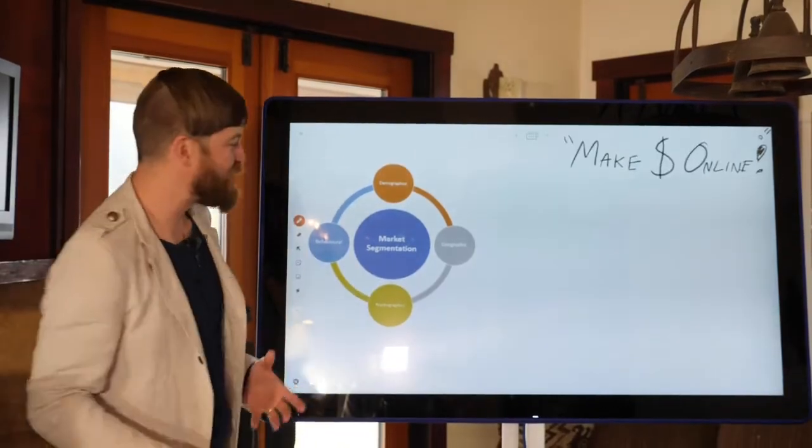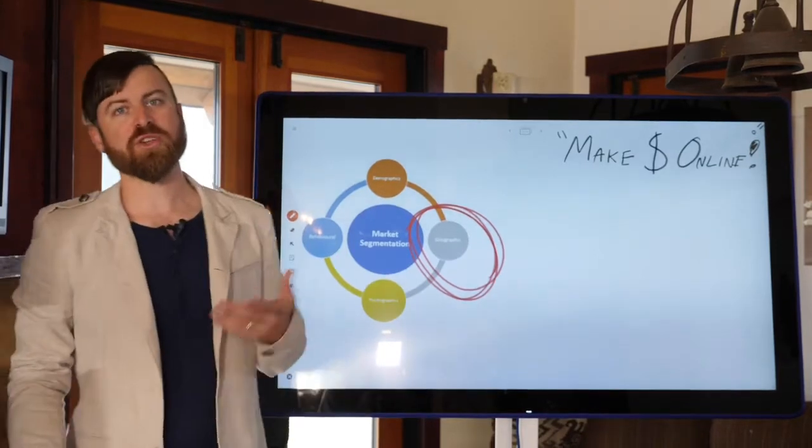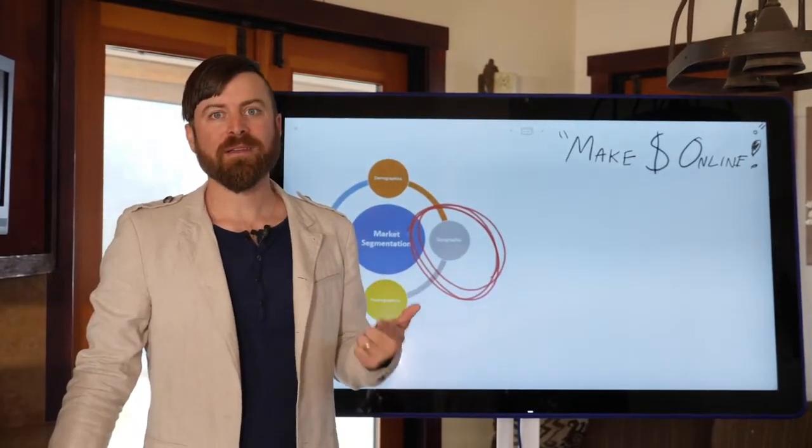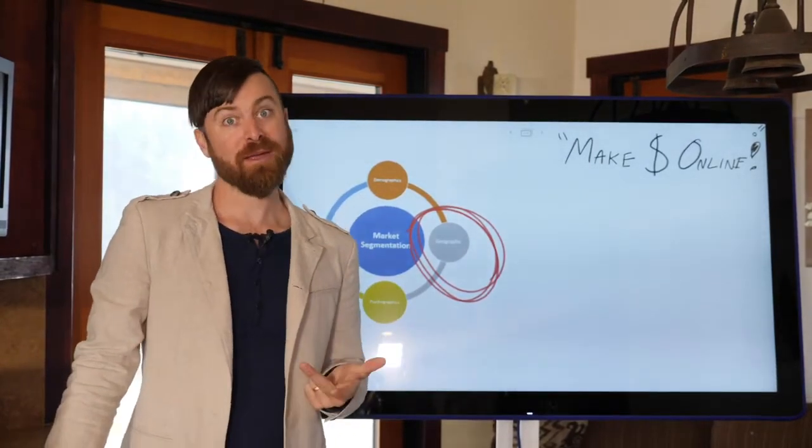The next form of market segmentation is geographic. Geographic market segmentation is calling out where somebody lives. I live in Malibu, California in the United States. Those are three attributes that you could segment people by.